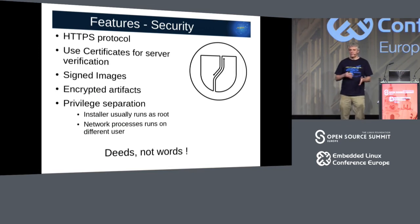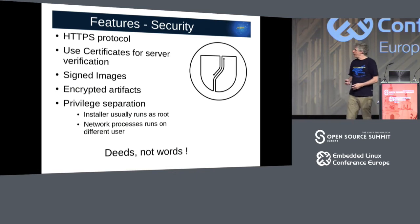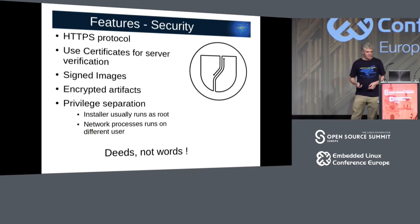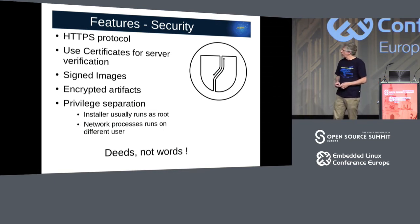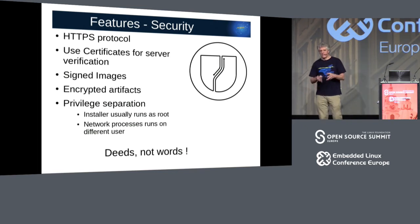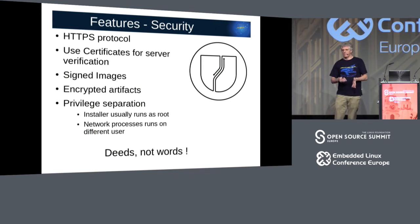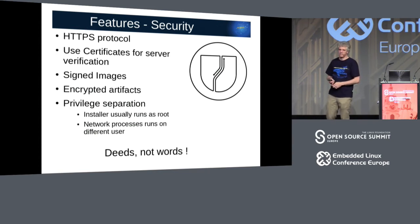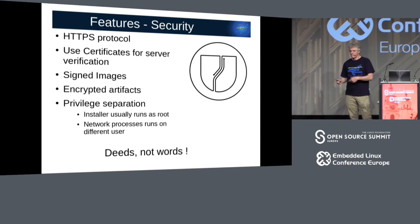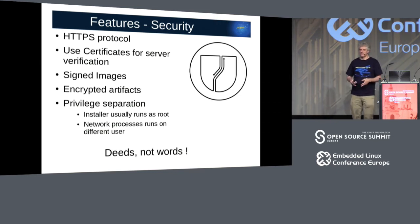There is a general interface to report installation status — important when you have a display and want to show, for example, that you are on step three of six and at 30% of that step. There is no temporary copy: the package can be streamed from an external server directly to storage without any temporary copy, meaning data is uncompressed, decrypted, and verified chunk by chunk without copying anywhere. Regarding security: I use libcurl, so HTTPS costs nothing — I can use all protocols supported by libcurl. There is privilege separation: only the installer, which must write to hardware, runs as root; all other processes can run under another user and group. This prevents a buffer overflow from giving root privileges to an attacker.